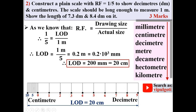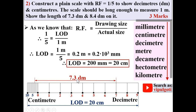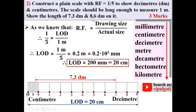The scale is now ready. To show 7.3 decimeters: the right side of zero indicates decimeters and the left side indicates centimeters. 7.3 decimeters means 7 decimeters and 3 centimeters. Locate 7 on the decimeter scale, then measure 3 centimeters on the centimeter side. That length represents 7.3 decimeters.